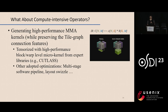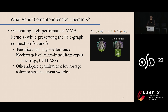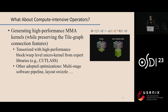Regarding how Welder generates the compute-intensive part of the TileGraph: Welder's code generation is implemented based on the existing TVM compiler. Since TVM-generated kernels often cannot compete with CUTLASS performance — especially under tensor core-enabled cases — Welder extracts high-performance block- or warp-level micro kernels from expert libraries like CUTLASS and drops them into the TileGraph using TVM's tensorize functionality. Welder also adopts multi-stage software pipelining and layout swizzle to achieve peak computation performance.